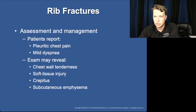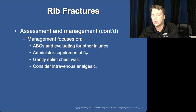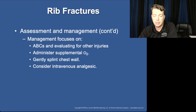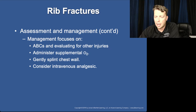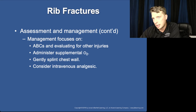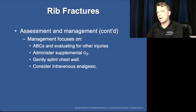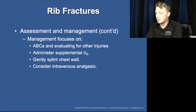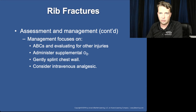Pleuritic chest pain is sharp, localized pain with each breath. You may find crepitus, tenderness, and contusions. Subcutaneous emphysema is a later finding requiring a severe fracture to rupture the lung and allow air to migrate into the subcutaneous tissue. Gently splinting — such as giving the patient a pillow to hug — is acceptable for rib fractures because unlike the flail segment, this does not reduce internal thoracic volume. Analgesics are the mainstay of treatment.